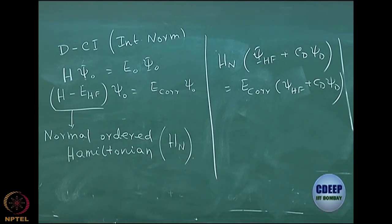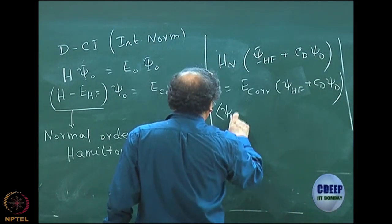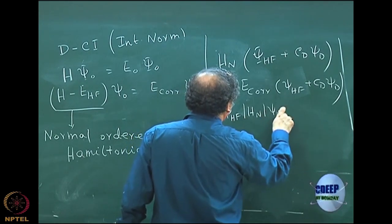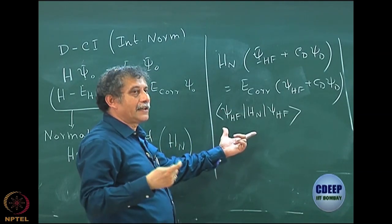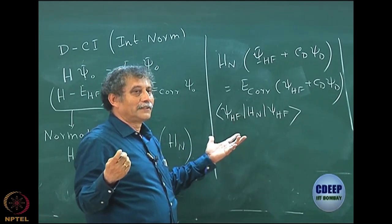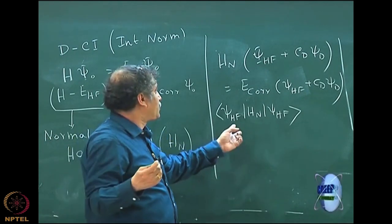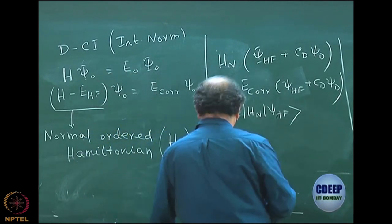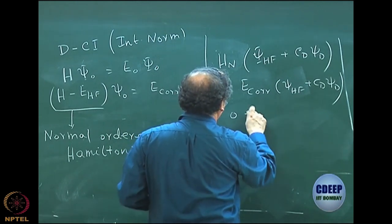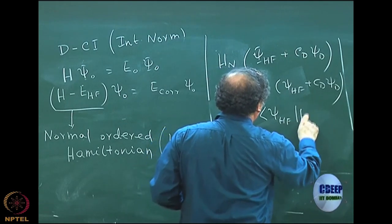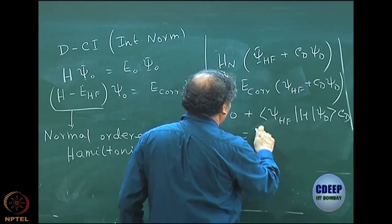I have subtracted E_Hartree-Fock from the Hamiltonian. Now, what is the result of H_N acting on psi_HF? The average value of H_N with respect to psi_HF is zero, because H gives E_Hartree-Fock and I have subtracted E_Hartree-Fock, so that term vanishes. So I can write: zero plus the matrix element psi_HF | H | psi_d times C_d equals E_correlation.